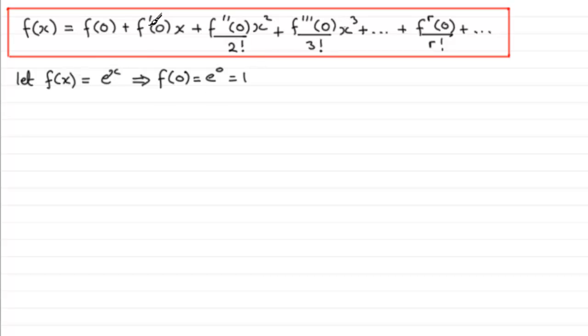And then to get the next term we need to find the first differential of f of x, f dash of x. And f dash of x is going to be e to the power of x again. So it follows that f dash of zero must equal e to the power of zero which again is one.